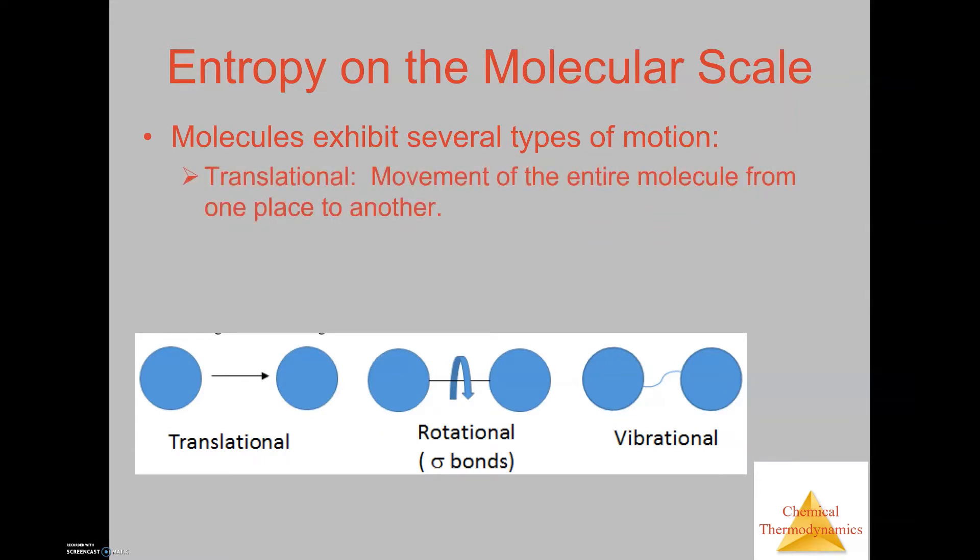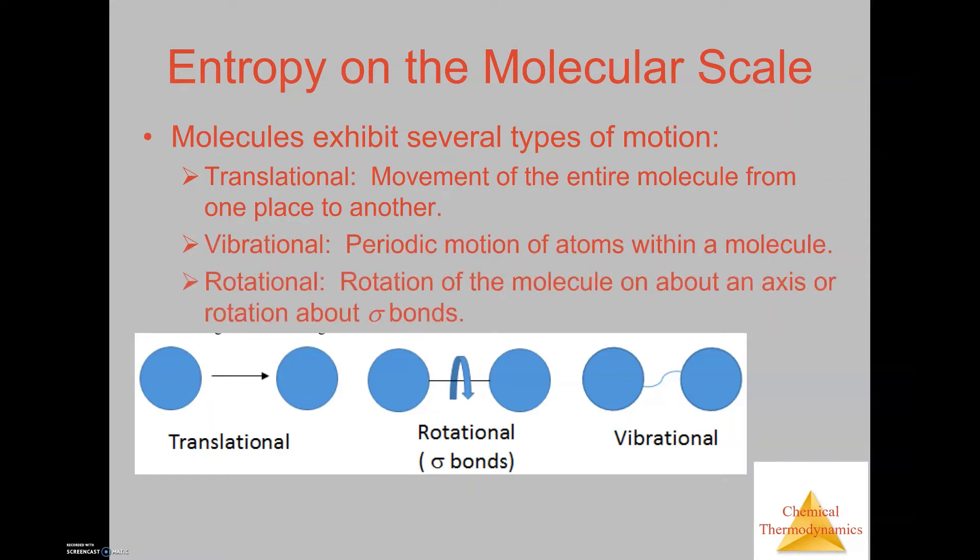Now as we talk about Boltzmann, he talks about molecules exhibiting several types of motions. The first motion is translational. Translational is just the movement of the entire molecule from one place to another. It would be like you walking from one spot in the room to a different spot in the room.